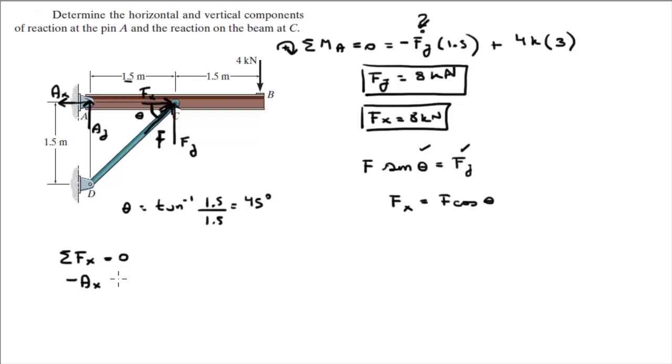So, you know that A_X is going to the left plus F of X, which is going to the right, is equal to 0. So, A_X is equal to 8 kilonewtons.